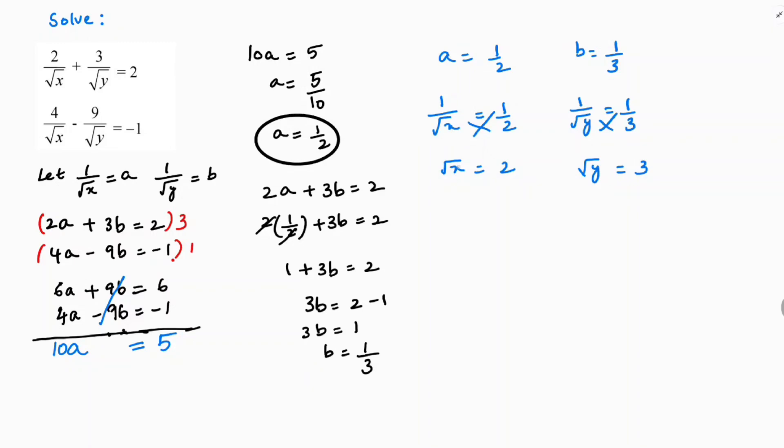So now I need just x but I'm getting root x. Here I'll do squaring on both sides, or you can say taking the root to the other side. So let's do squaring on both sides. So x value is 4. Here I will do squaring on both sides, so here it is y equals 9.